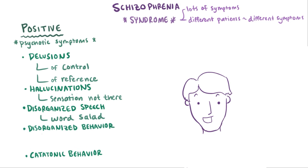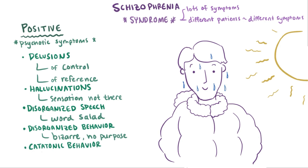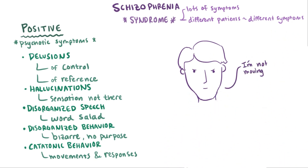Disorganized behavior could be like if they exhibit some bizarre or silly behavior that's out of context and doesn't seem to have much of a purpose — like, for example, wearing multiple layers of jackets on a hot summer day. Also, sometimes their behavior is described as catatonic, which has to do with their movements, posture, and responsiveness, so like they might be super resistant to moving or be in an unresponsive stupor.